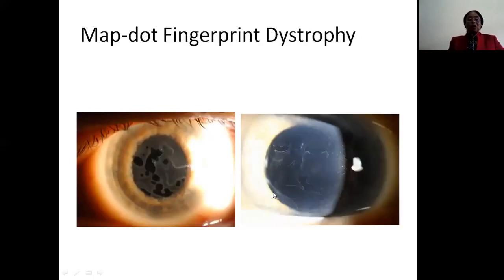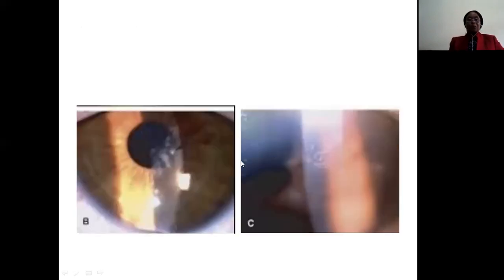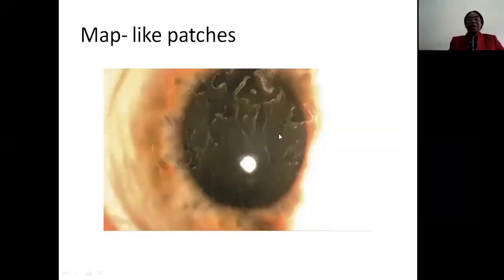You can see the microcysts and the fine lines. Here you can see the gray deposits appearing as dots, and here the gray deposits look like a map.